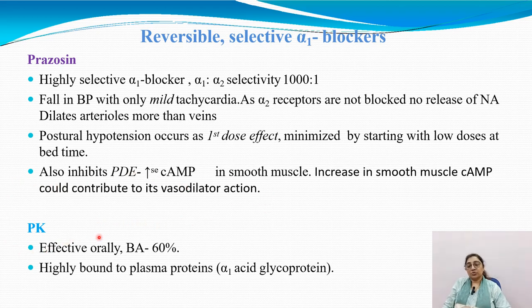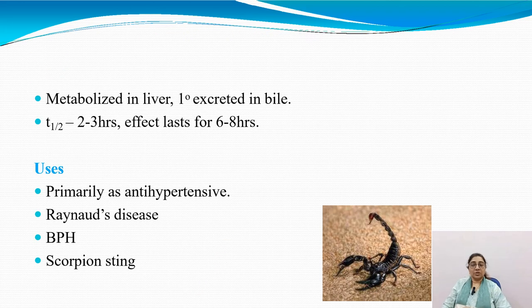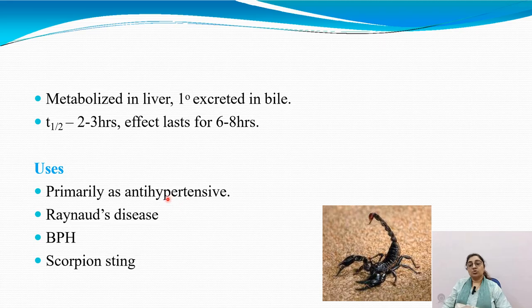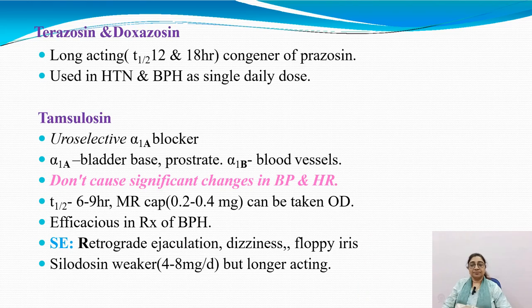Pharmacokinetics of prazosin: it is effective orally with 60% bioavailability; highly bound to plasma protein; metabolized in the liver and excreted in bile; half-life is 2–3 hours and lasts 6–8 hours. Uses: primarily as an antihypertensive; also used in Raynaud's disease, benign prostatic hypertrophy, and scorpion bites. Terazosin and doxazosin are long-acting congeners of prazosin used in hypertension and benign prostatic hypertrophy as a single daily dose.